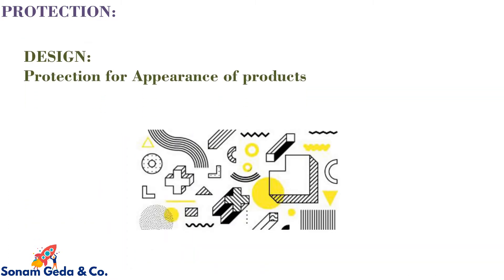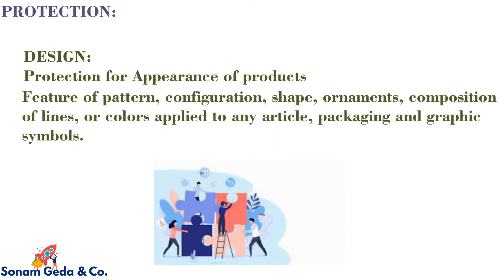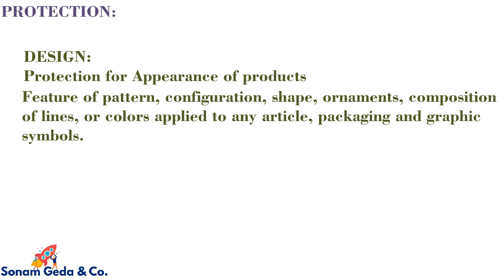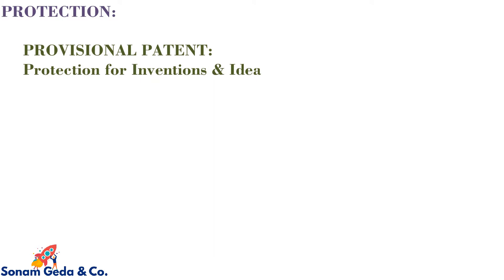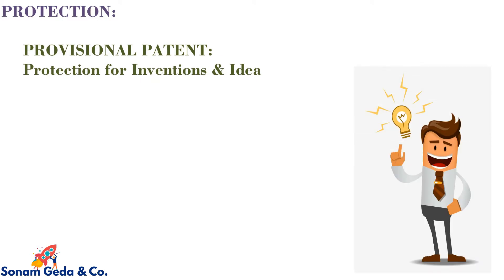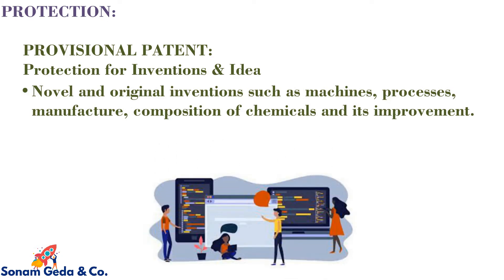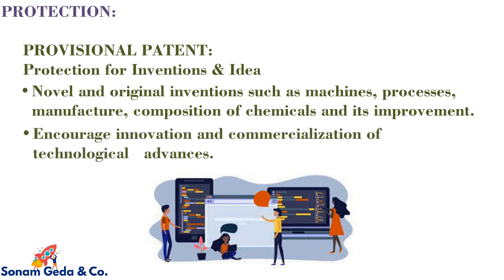In case of design, there is protection for appearance of products — feature of pattern, configuration, shape, ornaments, composition of lines or colors applied to any article, packing and graphic symbols. In case of provisional patent, there is protection for inventions and ideas — novel and original inventions such as machines, processes, manufacture, composition of chemicals and its improvement, encouraging innovation and commercialization of technological advances.